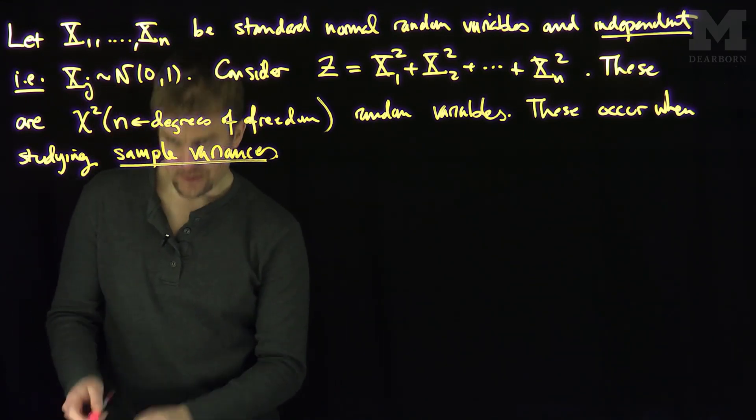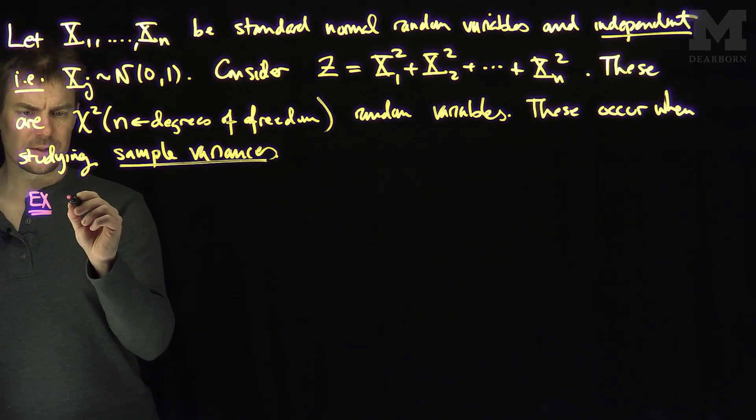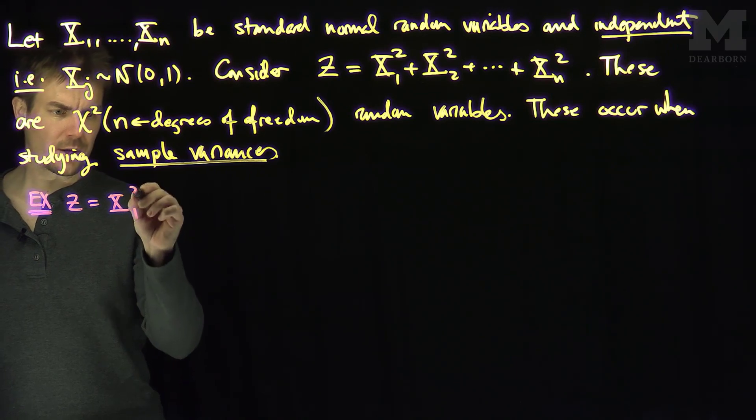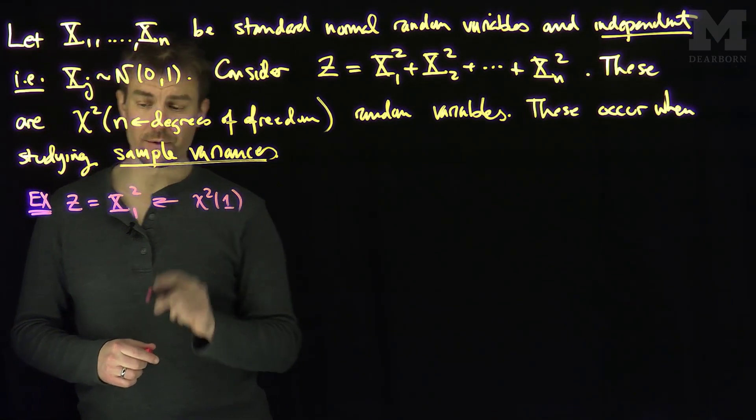Now what I'd like to do is consider a simple case of this. Example: Let's consider z is equal to x1-squared. This is of course just chi-squared with one degree of freedom.